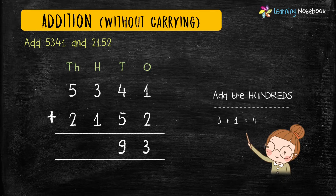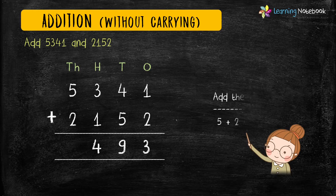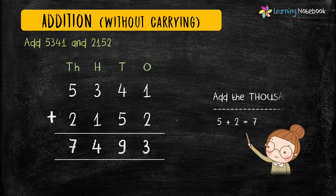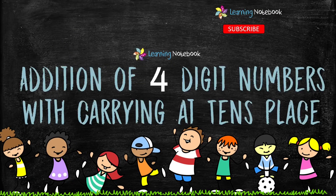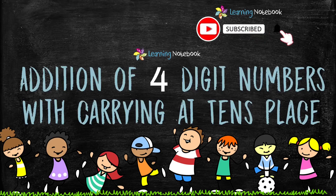Then add the digits at hundreds place: 3 plus 1 equals 4. And move on and add the digits at thousands place: 5 plus 2 equals 7. So the answer is 7493. This is how we add four digit numbers without carrying. Now let's see how to add four digit numbers with carrying at tens place.